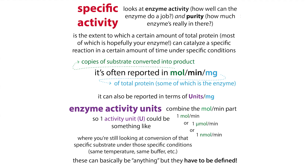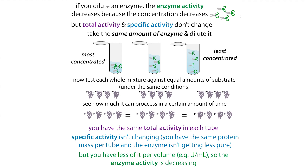Specific activity is where you divide the activity by the amount of total protein. If you don't need a lot of protein to get the work done, you'll have a really high specific activity. If you need a lot of protein, you'll have a really low specific activity. Some of that comes down to how pure your enzyme is — if 20 workers came and got the job done but only 10 were actually the enzyme of interest, your purity would be lower and your specific activity would be lower too.